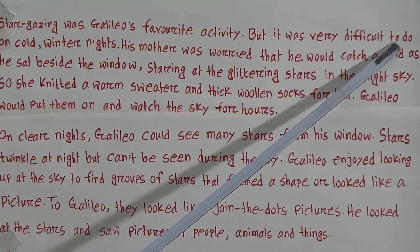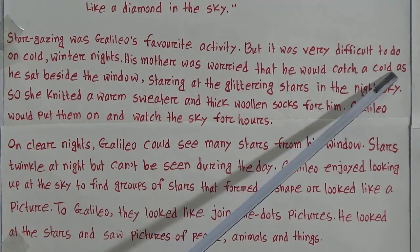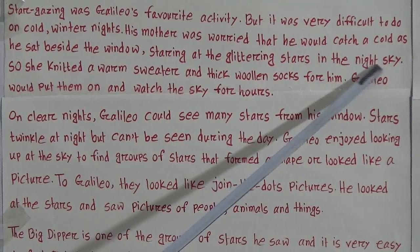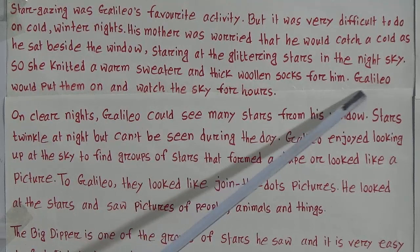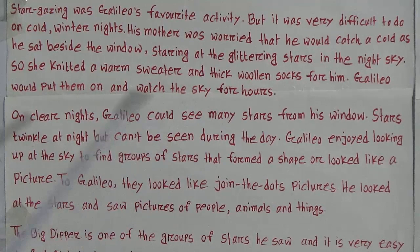But it was very difficult to do on cold winter nights. His mother was worried that he would catch a cold as he sat beside the window staring at the glittering stars in the night sky. So he needed a warm sweater and thick woolen socks. Galileo would put them on and watch the sky for hours.